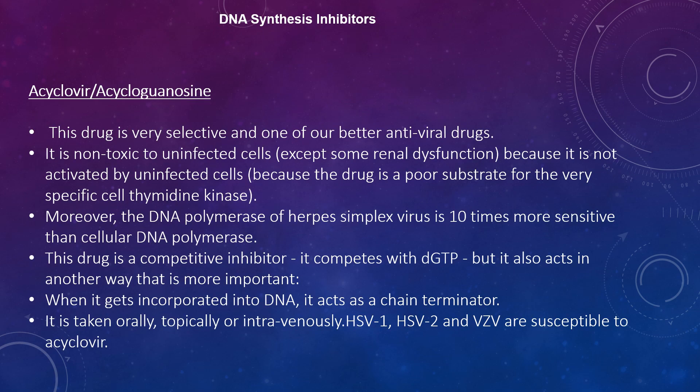DNA synthesis inhibitors such as acyclovir (acycloguanosine): this drug is very selective and is one of the better antiviral drugs. It is non-toxic to uninfected cells — except for some renal dysfunction — because it is not activated by uninfected cells as the drug is a poor substrate for the very specific cellular thymidine kinase. Moreover, the DNA polymerase of herpes simplex virus is 10 times more sensitive than cellular DNA polymerase. This drug is a competitive inhibitor — it competes with dGTP — but also acts as a chain terminator when incorporated into DNA. This is taken orally, topically, or intravenously and HSV-1, HSV-2, and VZV are susceptible to acyclovir.